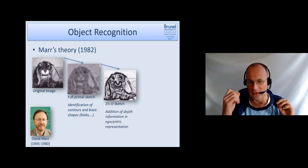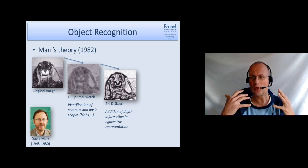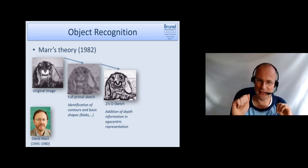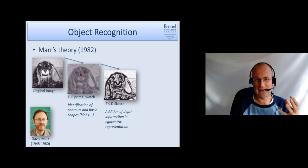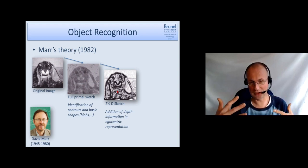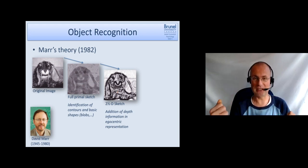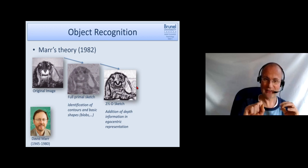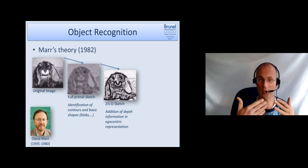Then this full primal sketch is transformed into what he termed a two and a half dimensional sketch. So basically this full primal sketch gets added spatial depth information but this information is in so called egocentric presentation. Egocentric means it's focused on myself so if I move in relation to the object my representation of the object changes.